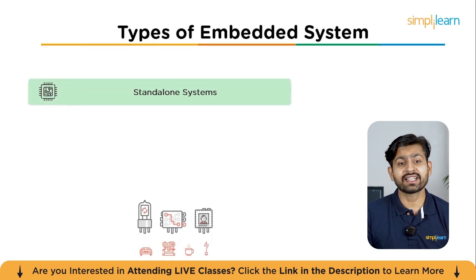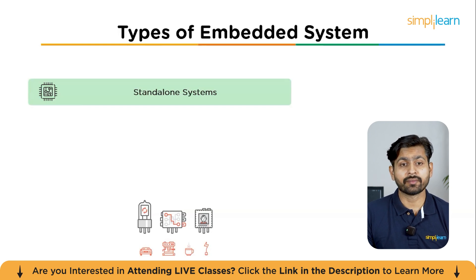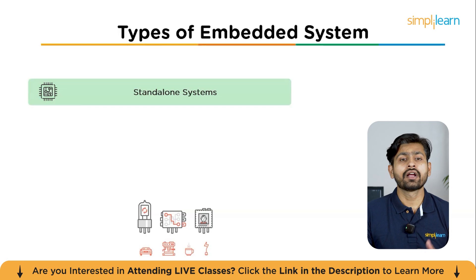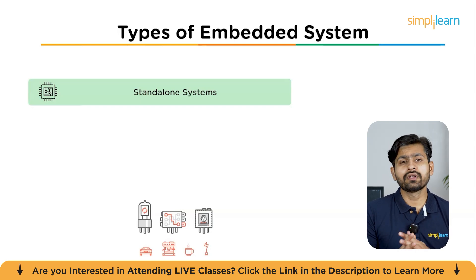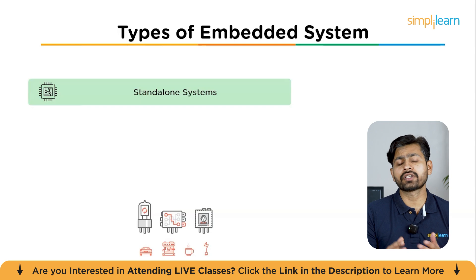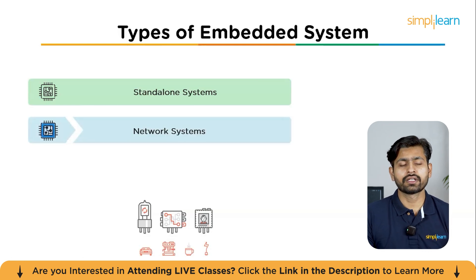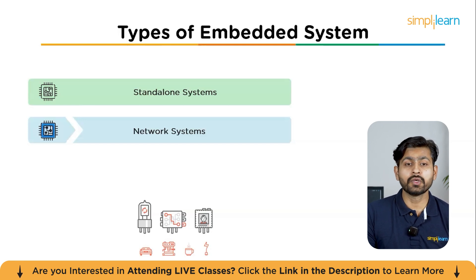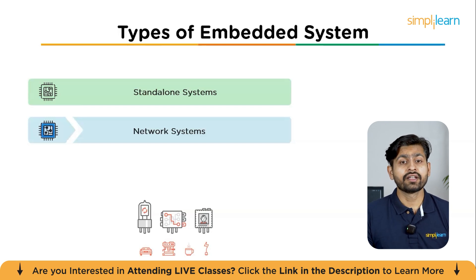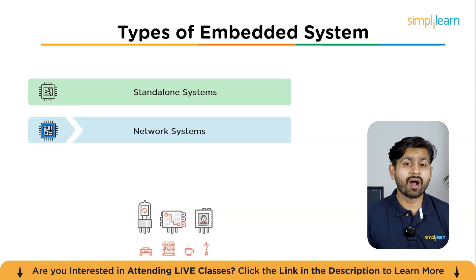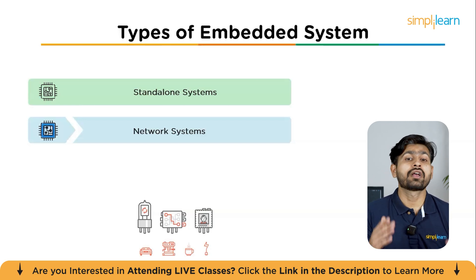Embedded systems come in a few types. First are standalone systems — they don't need to connect to any other device. A digital thermometer, for example, takes a temperature, processes it, and shows the result without depending on a computer or network. Next are networked systems, designed to communicate with other devices over Wi-Fi, Bluetooth, or Ethernet. IoT devices like smart light bulbs, home security cameras, and smart thermostats are good examples. Without a network, these systems lose a big part of their functionality.